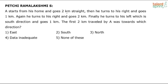A starts from his home and goes 2 kilometers straight, then turns to his right and goes 1 kilometer. Again he turns to his right and goes 2 kilometers. Finally he turns to his left, which is south direction, and goes 1 kilometer. The question is: the first 2 kilometers traveled by A was towards which direction?